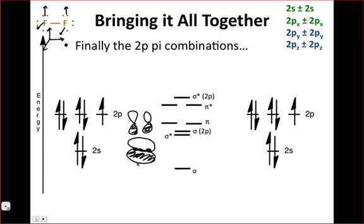And, of course, those will have opposite phase. And so we do see a node, you'll notice, in the pi-type combinations.